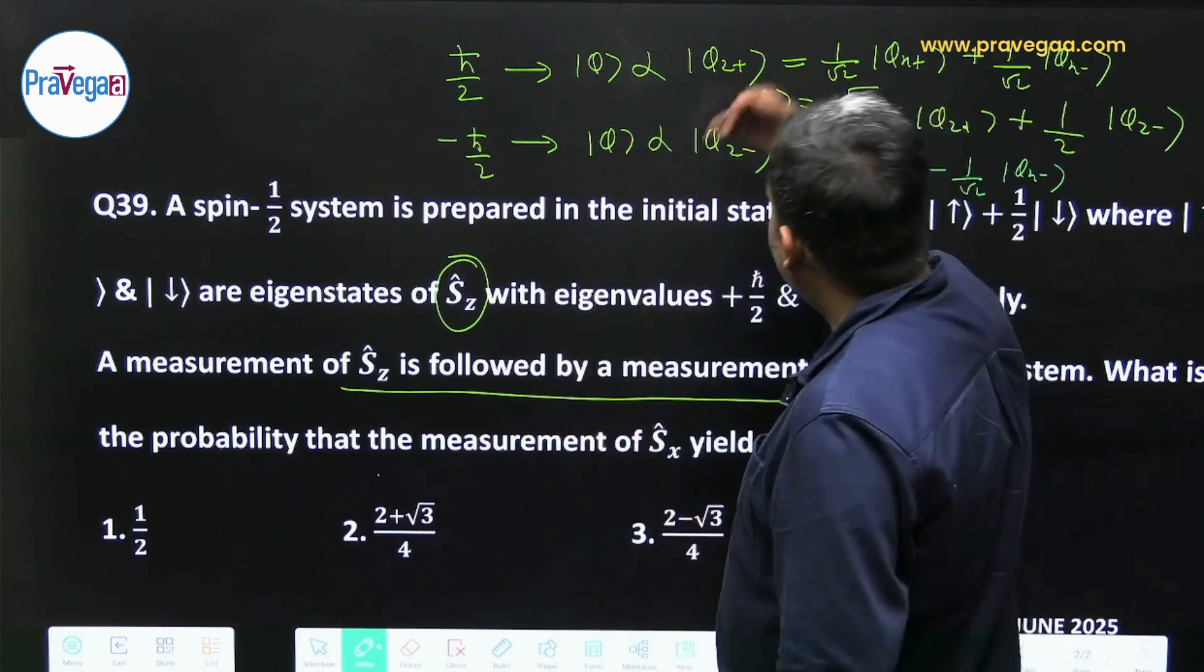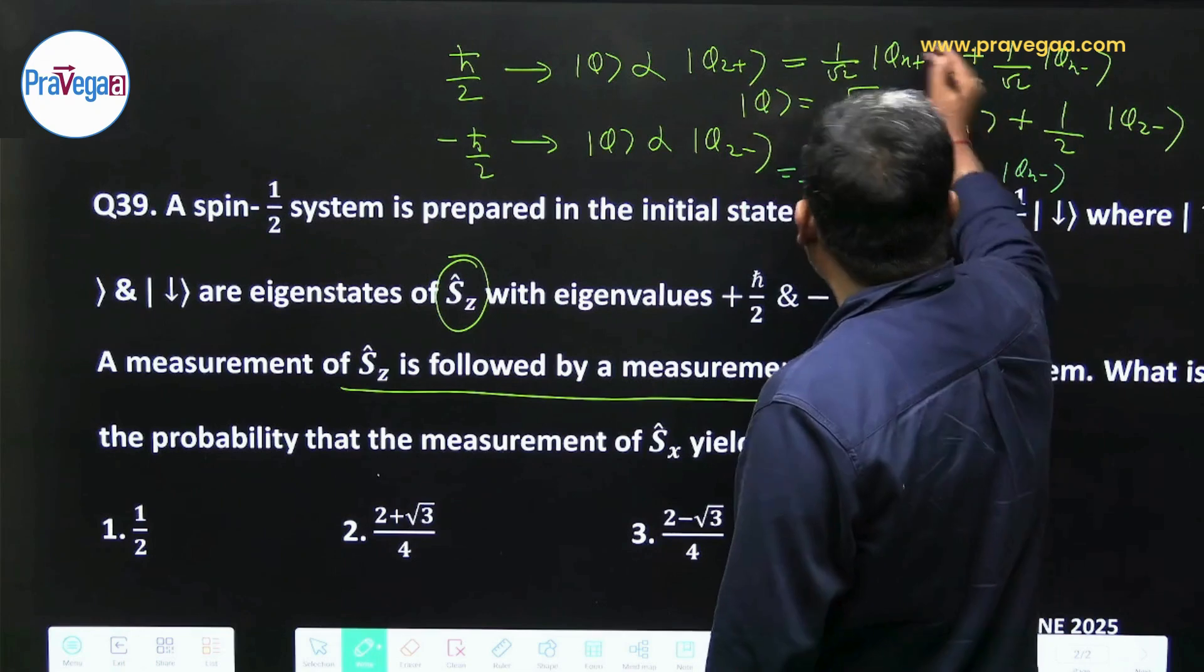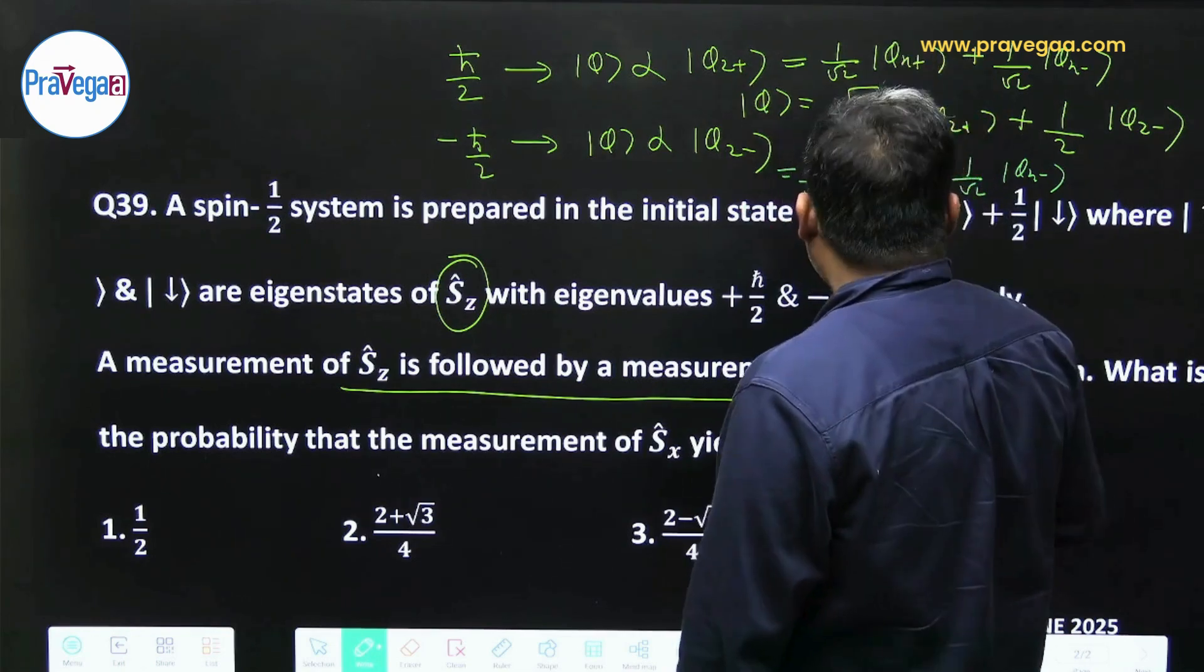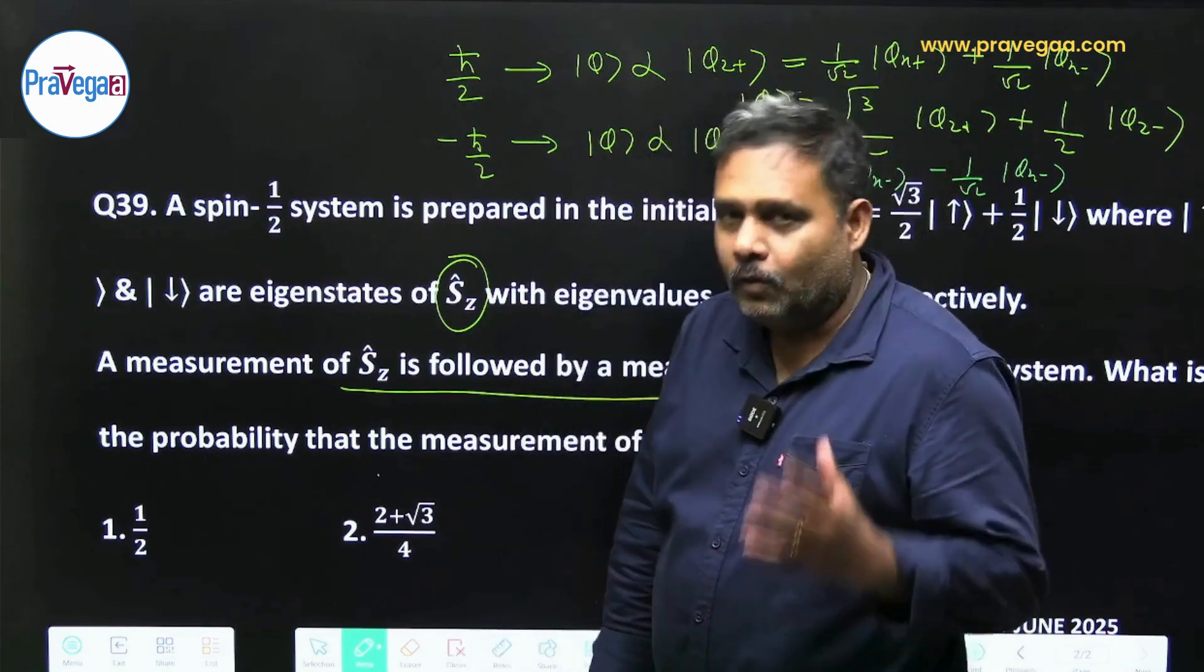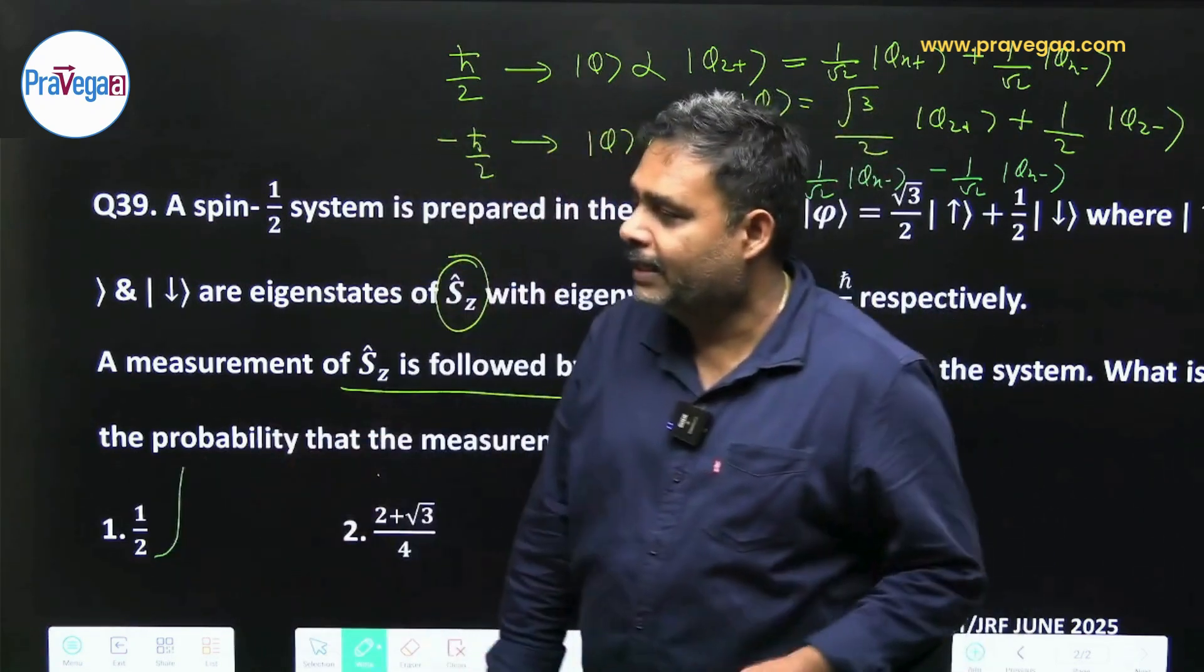Now agar either φz+ ko bhi measure karo ya φz- ko bhi measure karo, φx+ ki probability 50% hogi, that is half. So this is very interesting. So your answer will be half, jo CSIR ne diya hua hai.